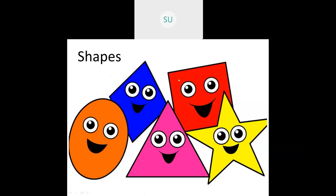A triangle has three sides. A square has four sides which are all the same — all four sides in a square are equal. A circle goes round and round; even if you turn it, the shape remains the same. It has only one curved surface and its edges never end.